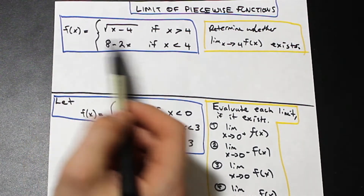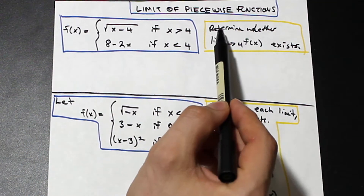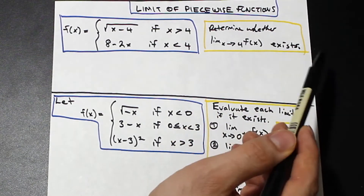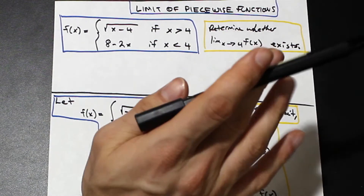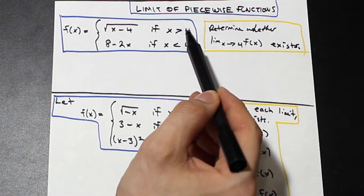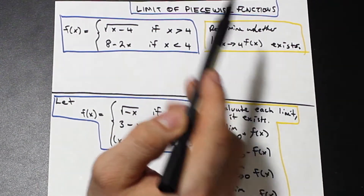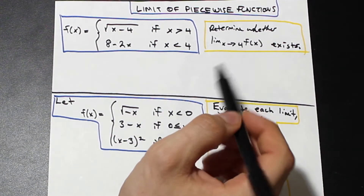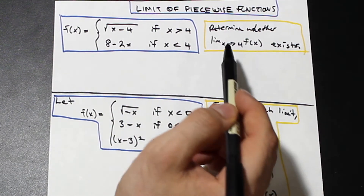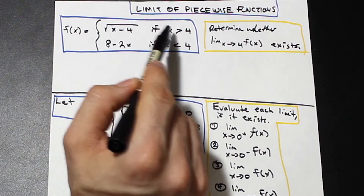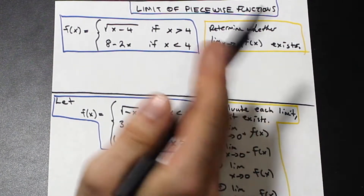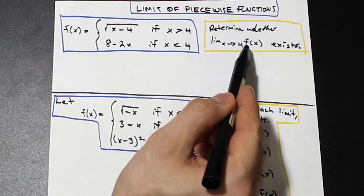In the first question, we have: when x is greater than 4, the function is defined as the square root of (x minus 4), and to the left of x equals 4, we have 8 minus 2x. The question asks us to determine whether the limit as x approaches 4 of f(x) exists. Since 4 is in between both functions, we need to take the limit from the left and the limit from the right — if they're equal, the limit exists.